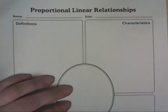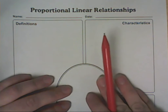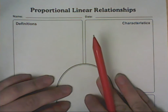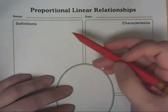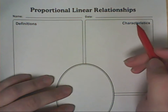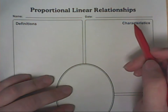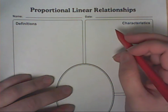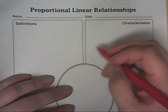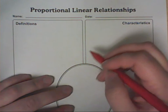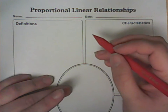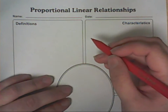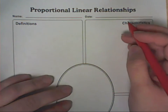All right, guys, today we're going to learn about proportional linear relationships and having that proportionality. So we're going to talk about the characteristics first. To determine if a graph, a table, an equation, or words are proportional, we have to follow these characteristics.